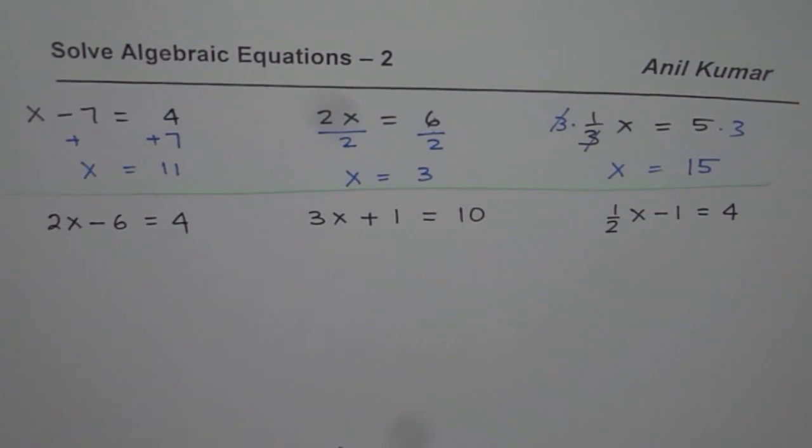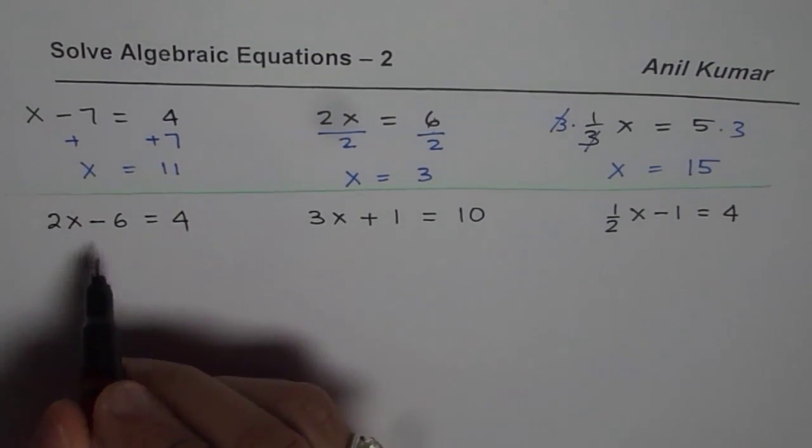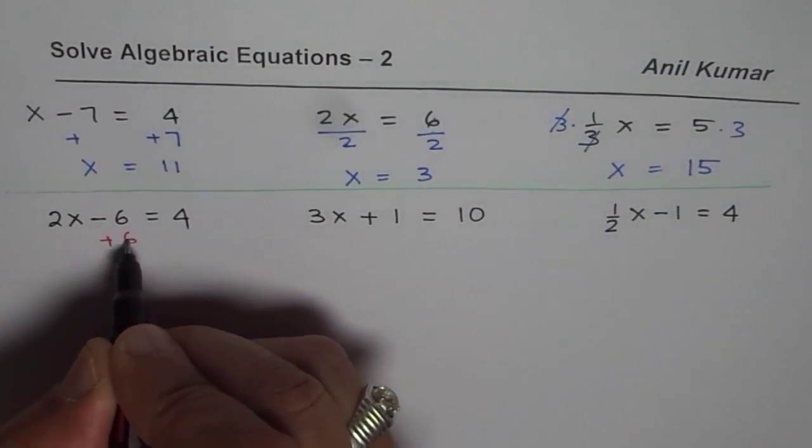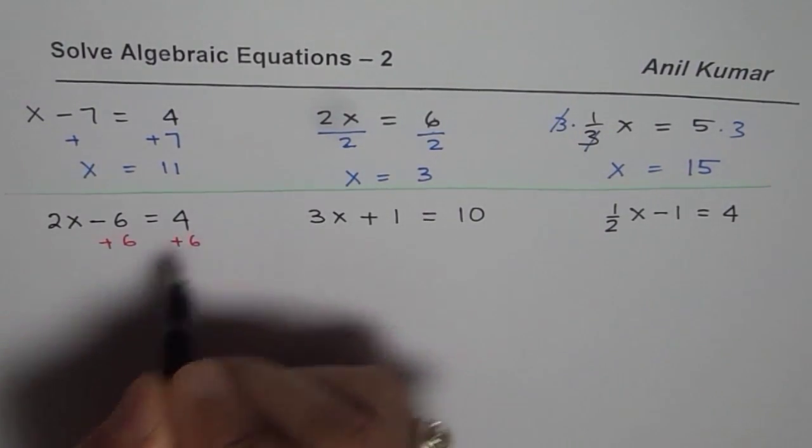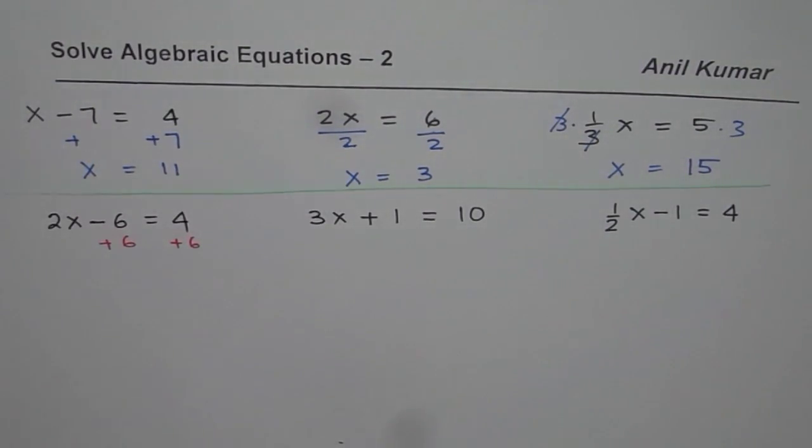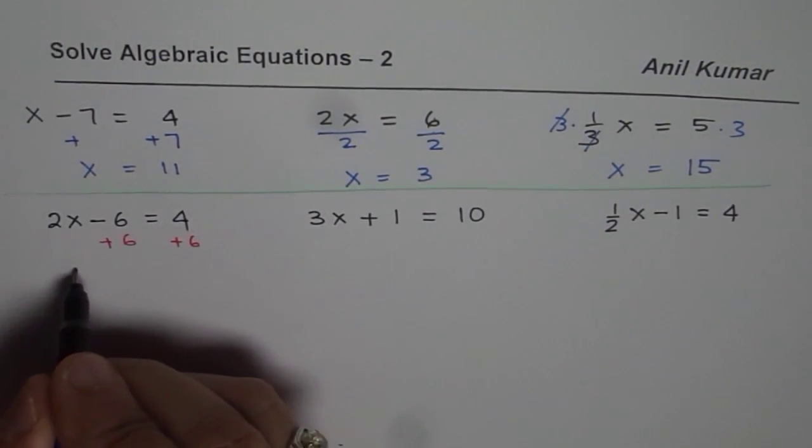Let's go through these steps one by one. To solve the first one what I will do is I will add 6 on both sides, so that is the first thing. If I add 6 on both sides what do I get? I get 2x